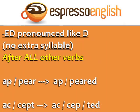The third pronunciation of ED is like D with no extra syllable. ED is pronounced like D after all other verbs that don't fit in the first or second categories. For example, the past of APPEAR is APPEARED — APPEAR has two syllables and APPEARED also has two syllables.